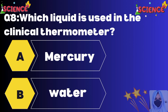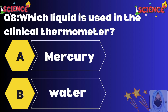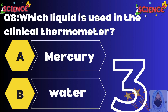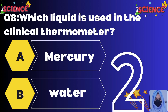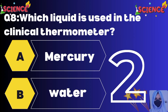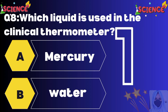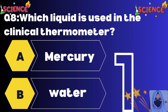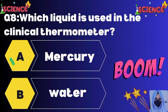Which liquid is used in the clinical thermometer? Option A mercury, option B water. The correct answer is A, mercury.